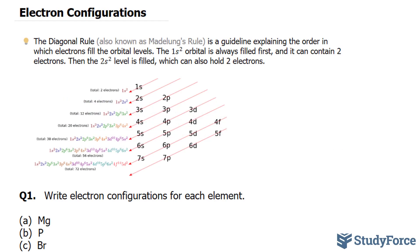In this short tutorial, we'll be writing the electron configuration of several different elements. To do this, you'll need to know the diagonal rule, and the diagonal rule is a guideline explaining the order in which electrons fill the orbital levels. The order in which the electrons fill these orbitals is shown underneath.